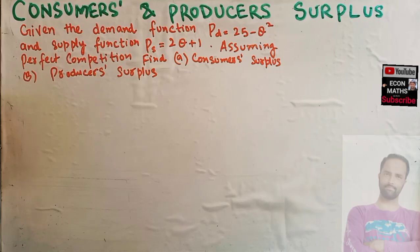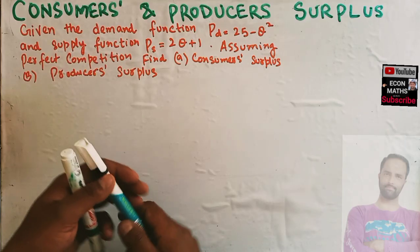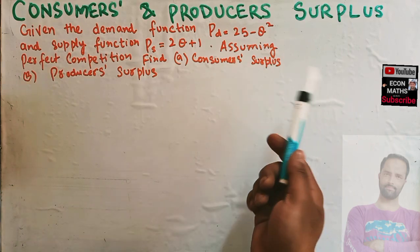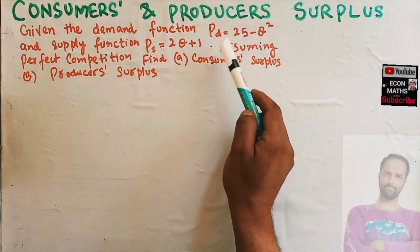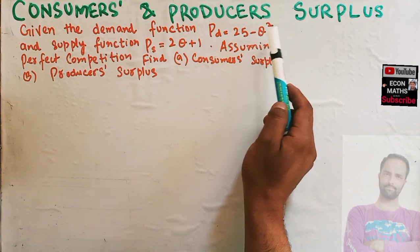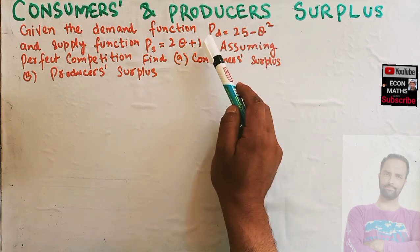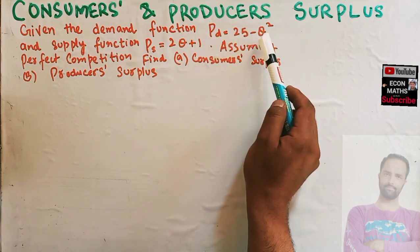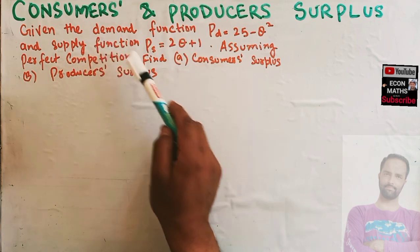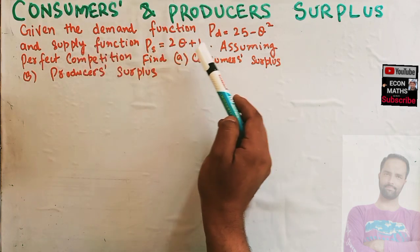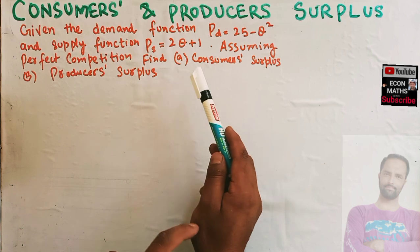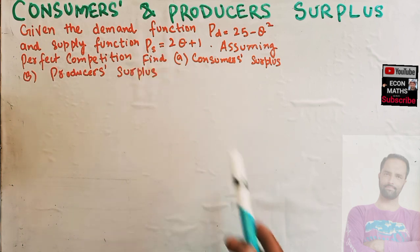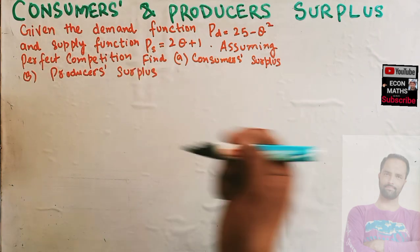In this video we will try to solve a question on consumer surplus and producer surplus. This question was asked in the Telegram channel of EconMax. The question is: given the demand function pd = 25 minus q squared, where pd denotes price and q denotes quantity, and supply function ps = 2q + 1, assuming perfect competition, find consumer surplus and producer surplus.